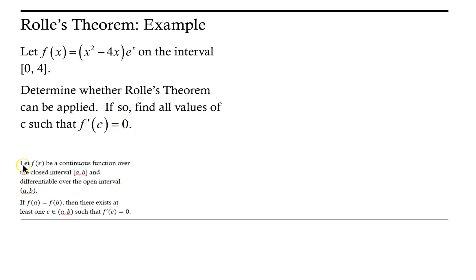Here we have Rolle's theorem as a reminder. Let f(x) be a continuous function over the closed interval from a to b — in our example, that interval is 0 to 4 — and differentiable over the open interval from a to b. If f(a) equals f(b), then there exists at least one c in the interval from a to b such that f'(c) = 0.